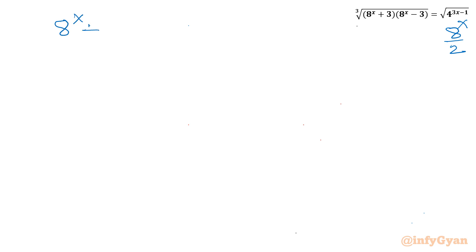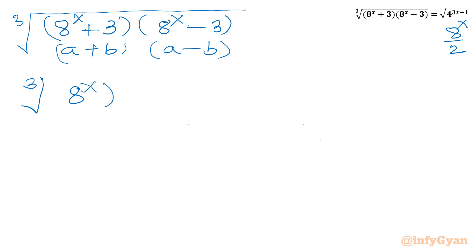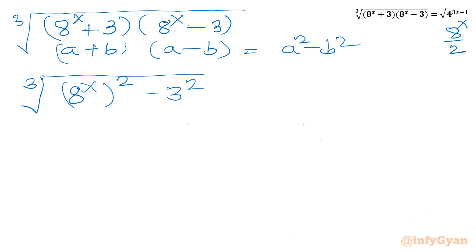Now let us consider LHS. LHS is cube root of (8^x + 3)(8^x − 3). Applying the difference of two squares formula, with A = 8^x and B = 3, this becomes cube root of ((8^x)² − 3²), which equals cube root of ((8^x)² − 9). This is our LHS.